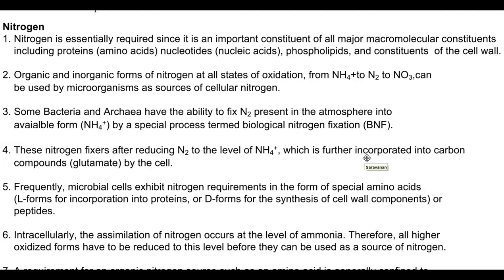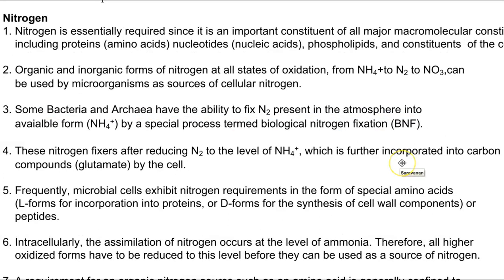Microbes living in anaerobic environments such as paddy soil can use ammonia as a nitrogen source. Diazotrophic organisms — bacteria and archaea capable of fixing atmospheric nitrogen — convert it into ammonia through a process called biological nitrogen fixation (BNF). These nitrogen fixers reduce nitrogen to the ammonia level, which is then incorporated into organic compounds, especially glutamate, inside the cell.